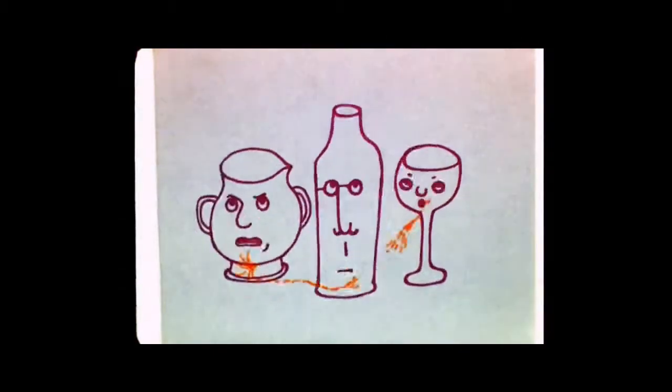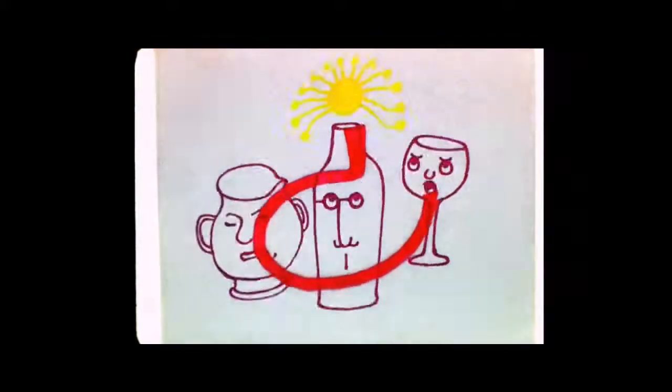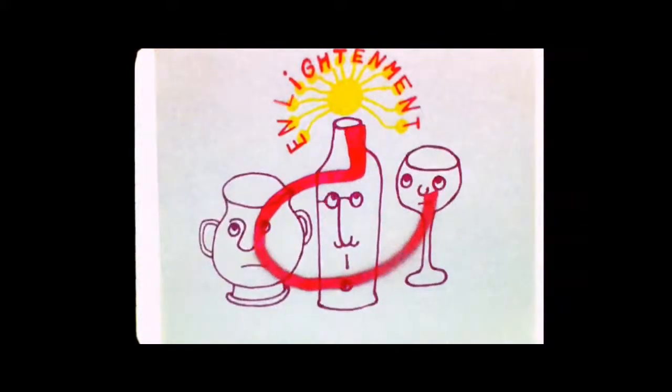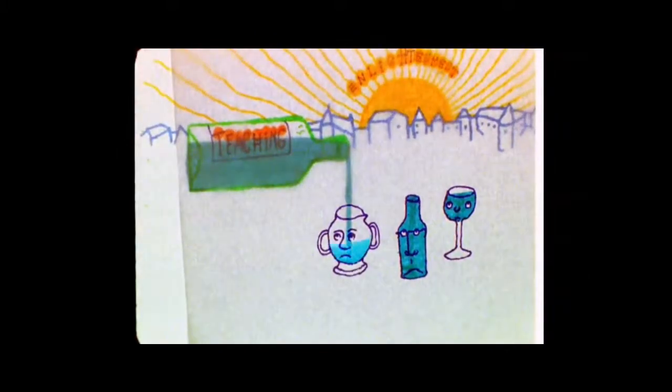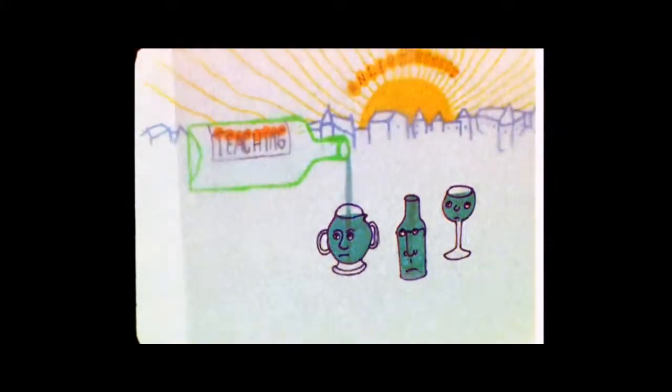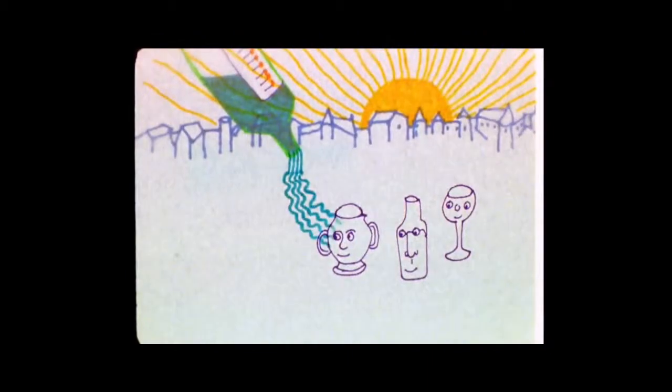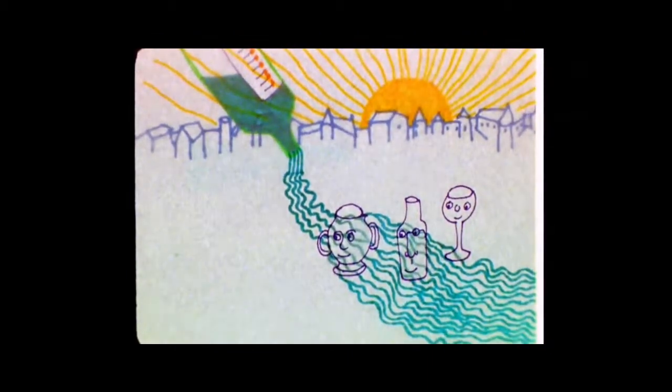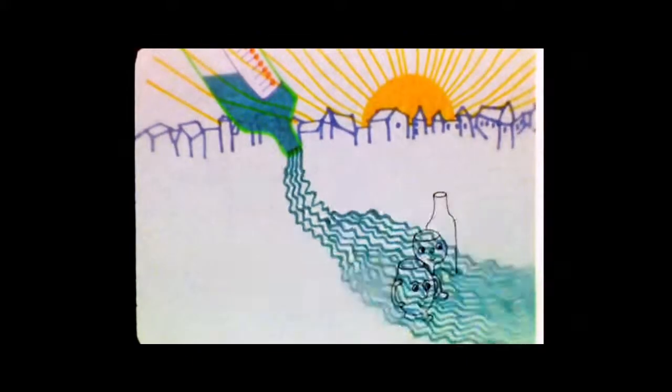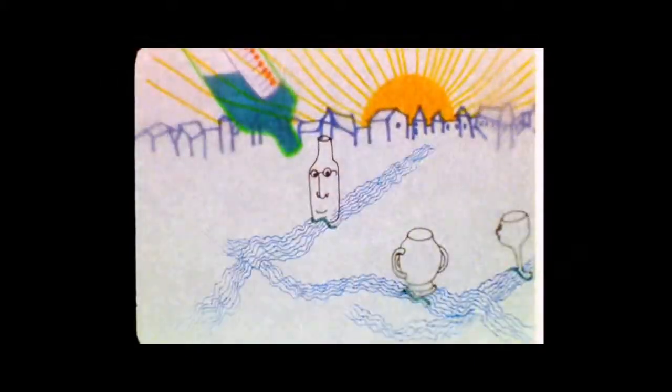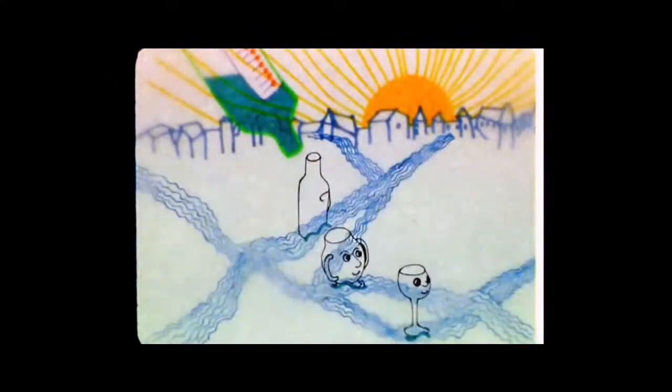They should be taught to challenge and to question. Images that come from the Enlightenment about this say that teaching should not be like pouring water into a vessel. It should be like laying out a string along which the student travels in his or her own way, and maybe even questioning whether the string's in the right place.